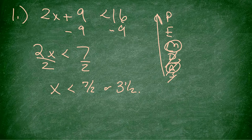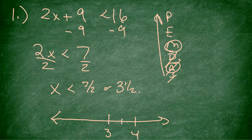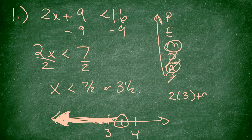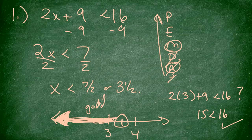So x is less than 7 halves, or 3.5. To have our answer, we make the number line. I put 3 and a half in the middle — there's 3, there's 4 — and I put an open dot. I shade to the left because it's less than. To test, I pick 3: is 2 times 3 plus 9 less than 16? That's 15, which is less than 16. Good — that's the correct shaded region.